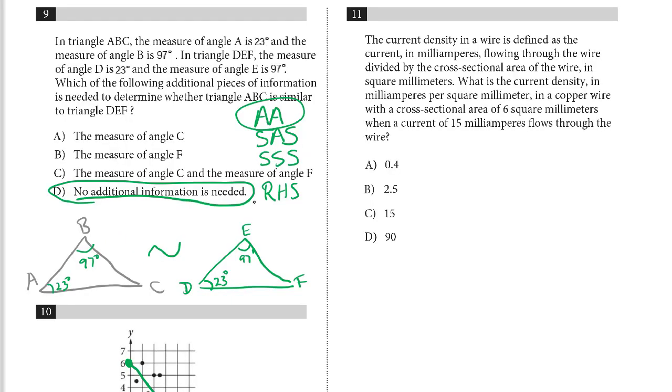Number 11. The current density in a wire is defined as the current in milliamperes flowing through the wire divided by the cross-sectional area in square millimeters. If we have 6 square millimeters cross-sectional area and 15 milliamperes of current, what is the current density in the wire? Well,